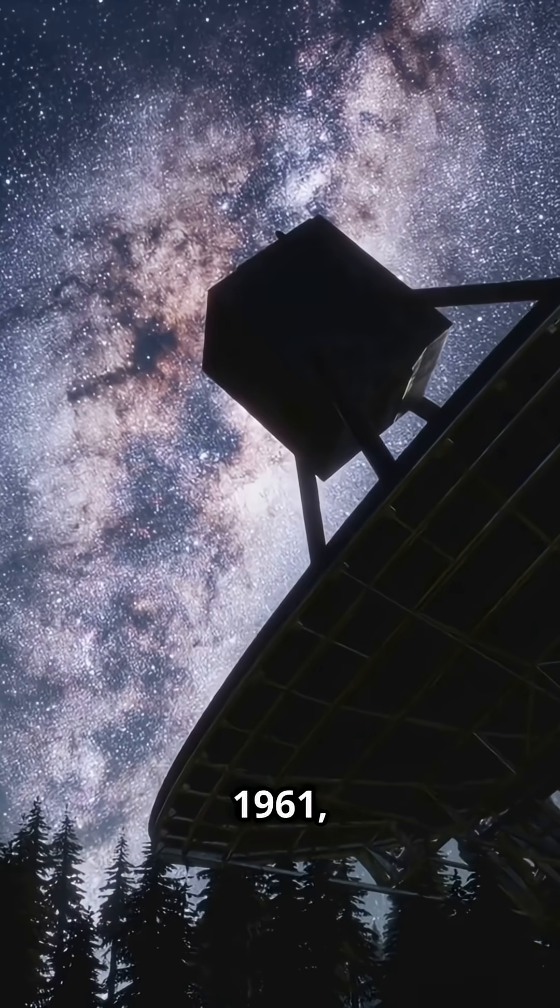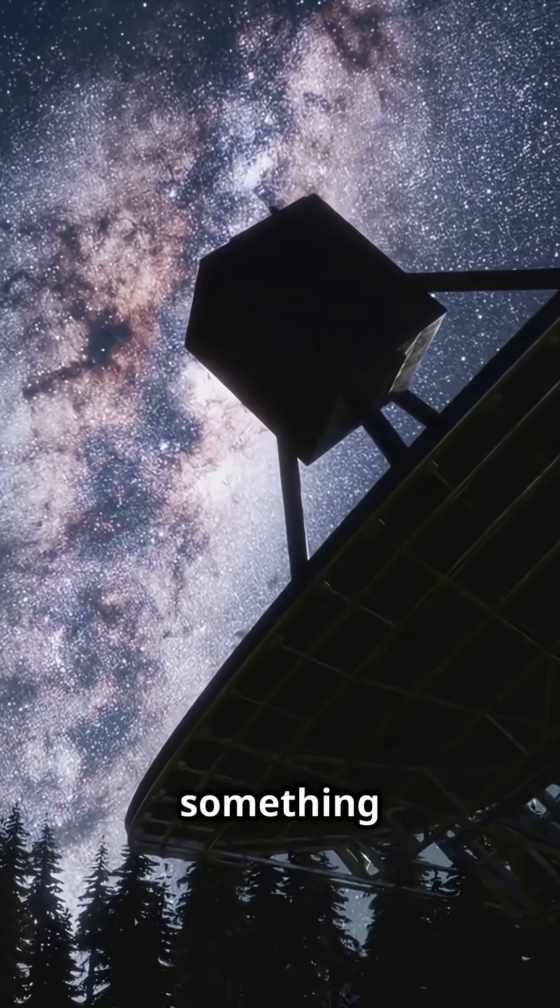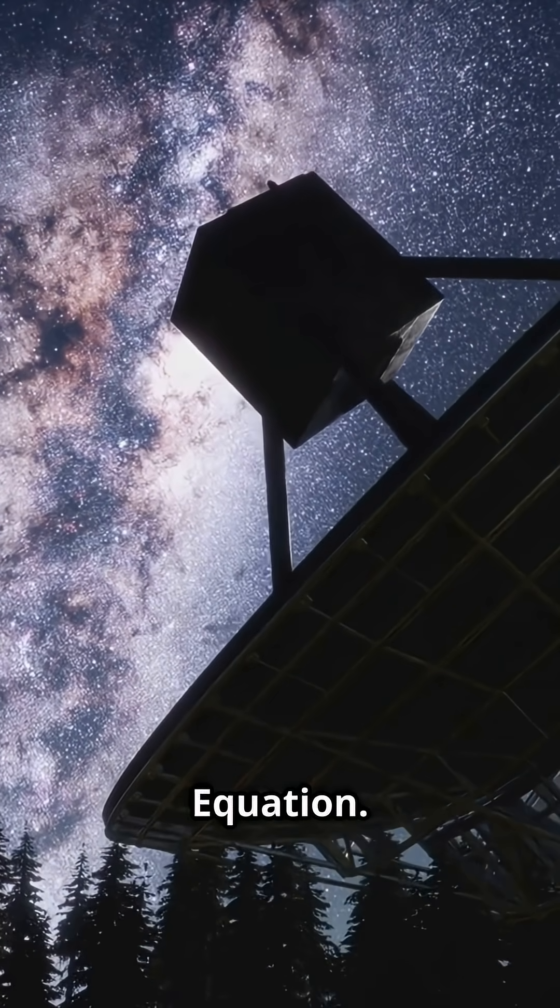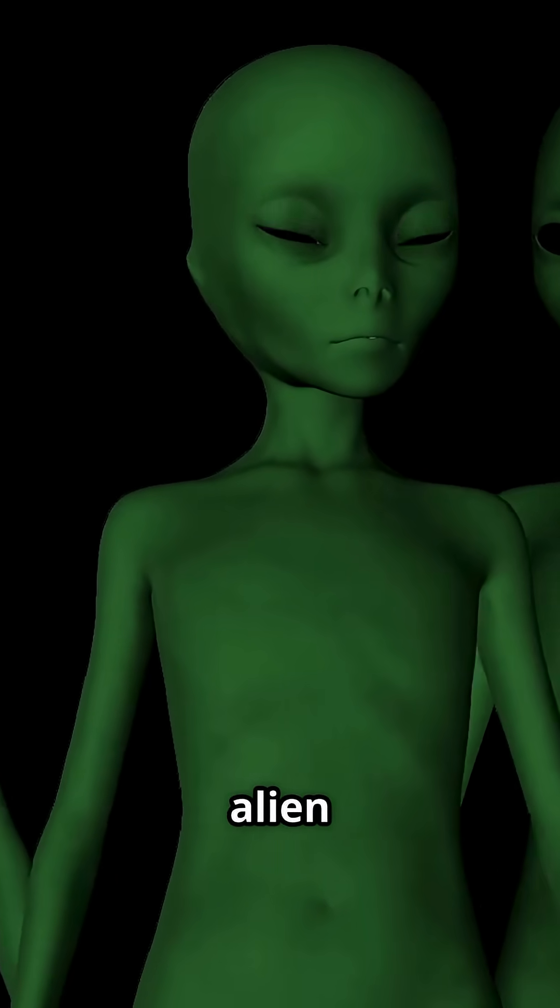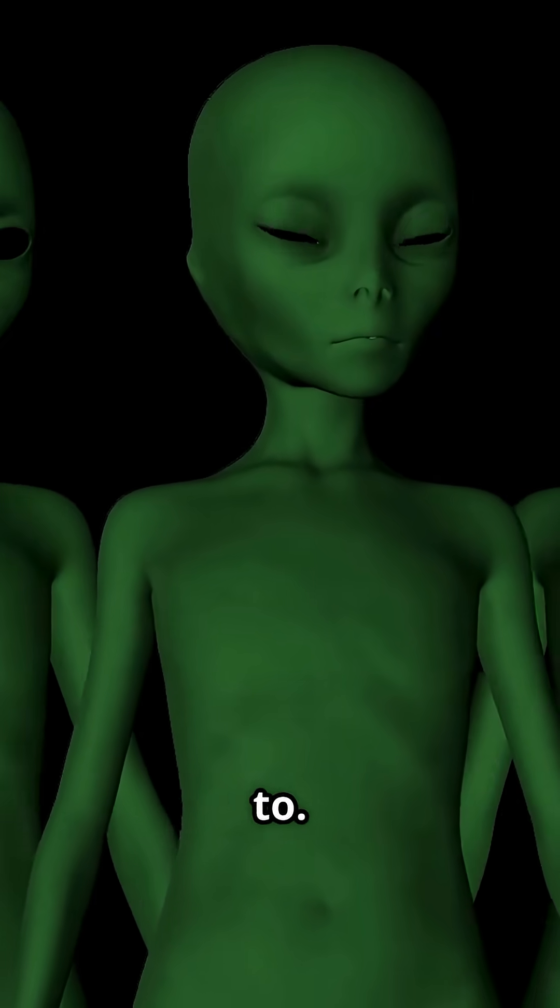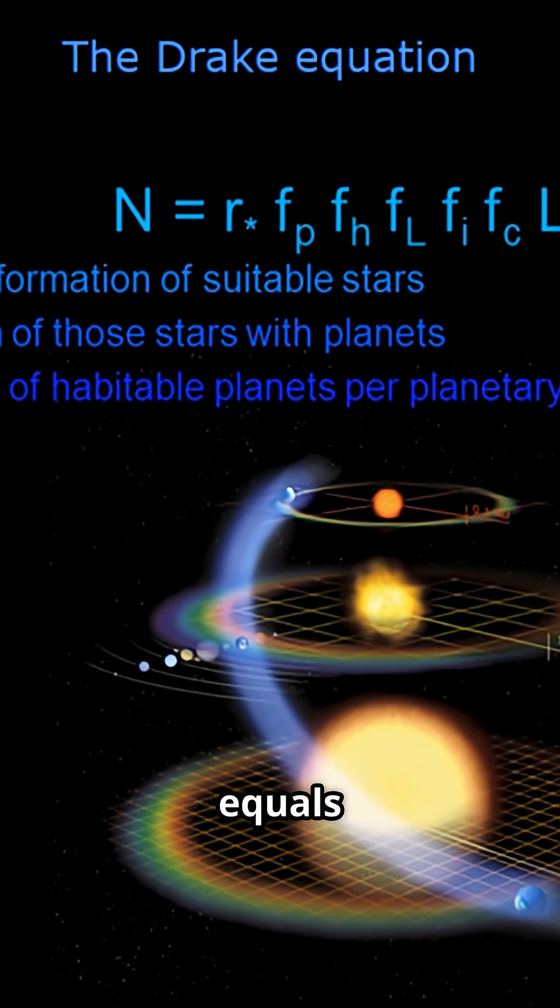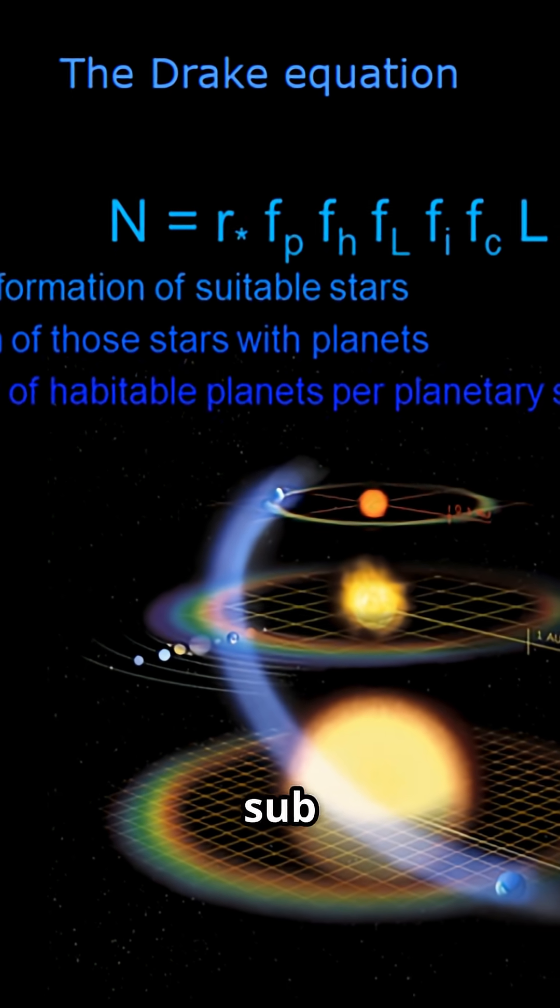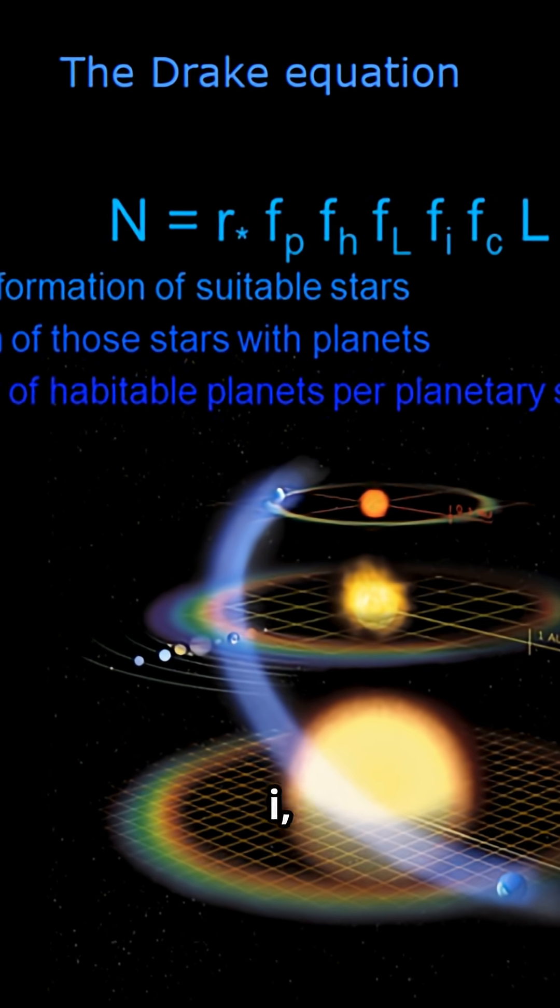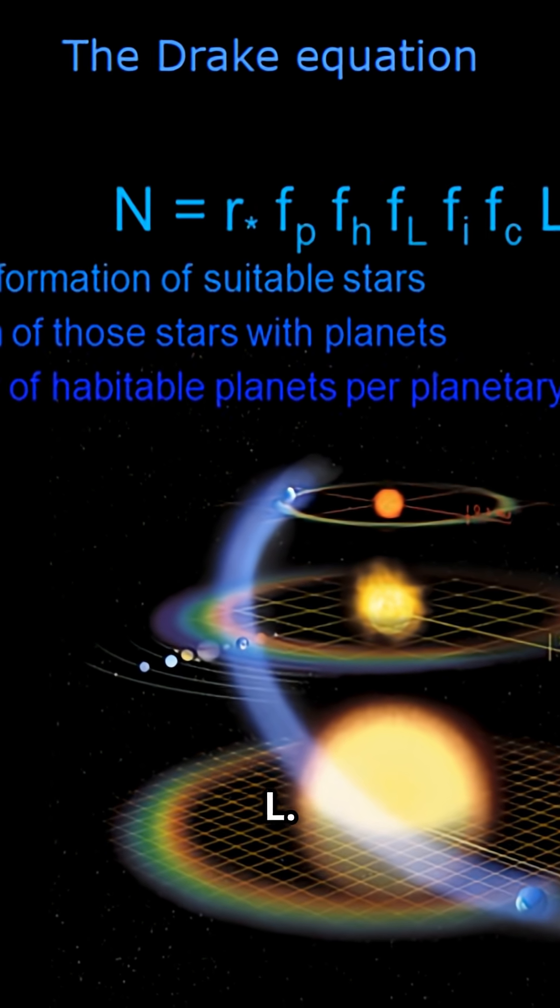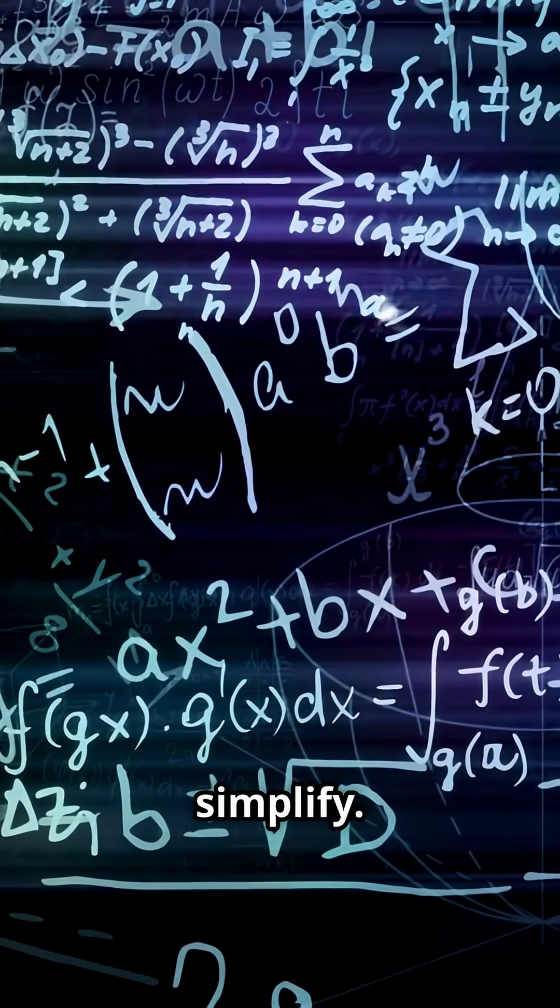Back in 1961, Frank Drake whipped up something pretty legendary, the Drake equation. It's a kind of cosmic recipe for estimating the number of alien civilizations we could actually talk to. The equation goes N equals R star times F sub P times N sub E times F sub L times F sub I times F sub C times L. But don't worry, I'll simplify.